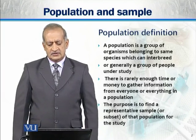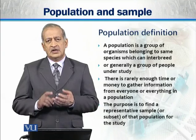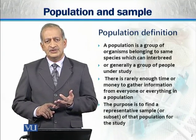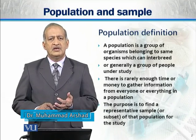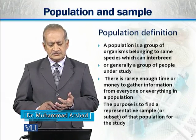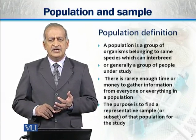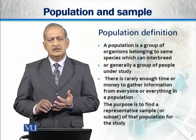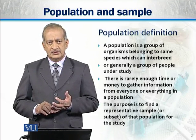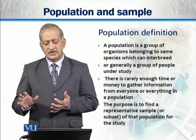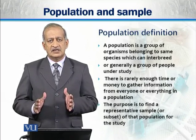What is the definition of population? A population is a group of organisms belonging to the same species and which can interbreed with each other. Generally, we say it is a group of people which are under study. There is not really enough time or enough money to gather information from the whole population, so it is not possible to study everyone or everything. That is why we will discuss a sample.